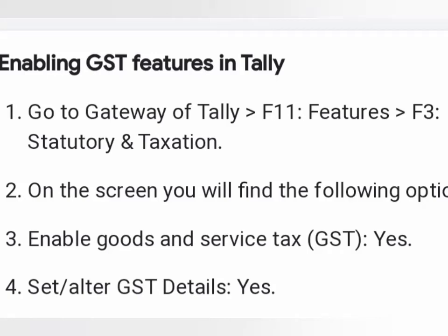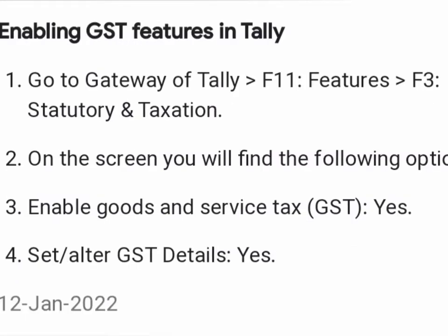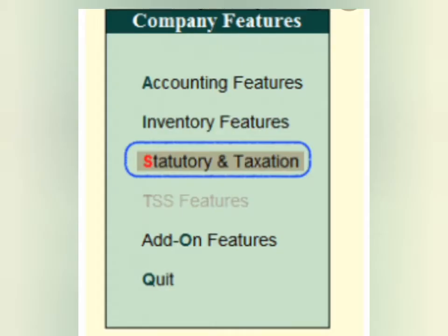In today's class, let us learn about how to enable GST. For this purpose, we have to go to the main menu Gateway of Tally, then create a company. After creating a company, we have to press F11. When we press F11, the screen will display Company Features, as you can see on screen.